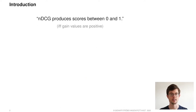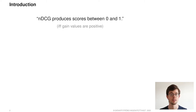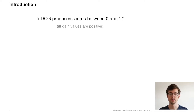NDCG as an IR evaluation measure is commonly assumed to produce scores between 0 and 1. This, however, is only true if the relevance labels used to calculate NDCG are positive.